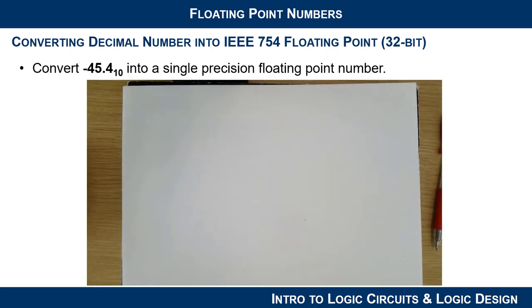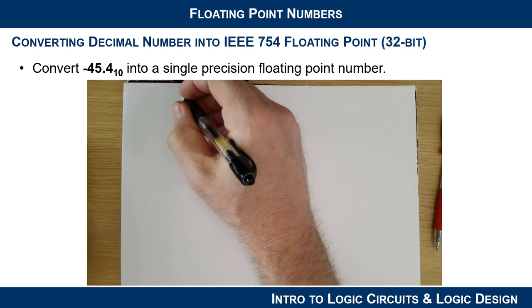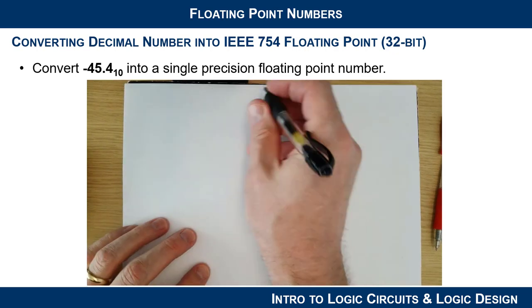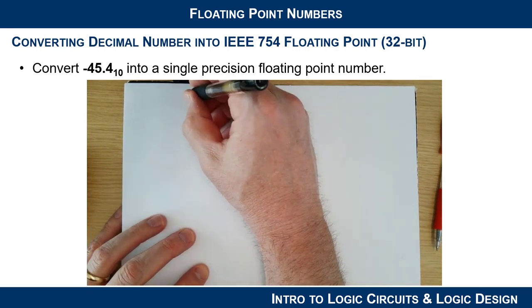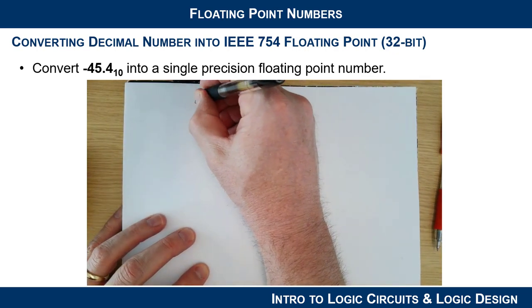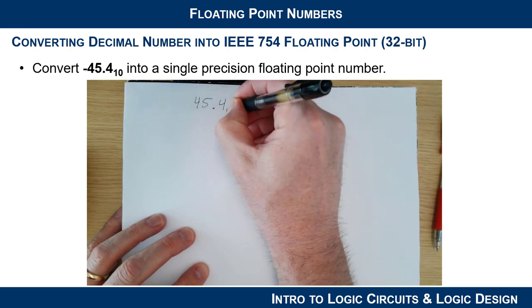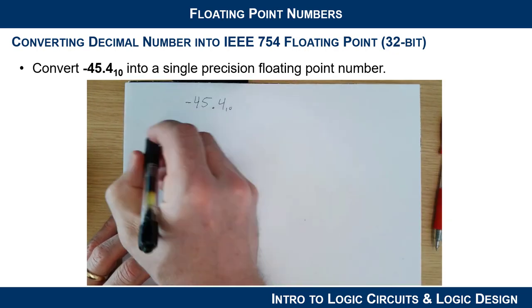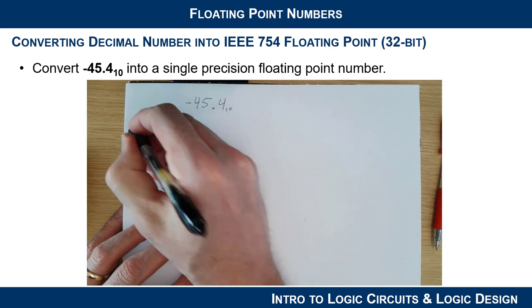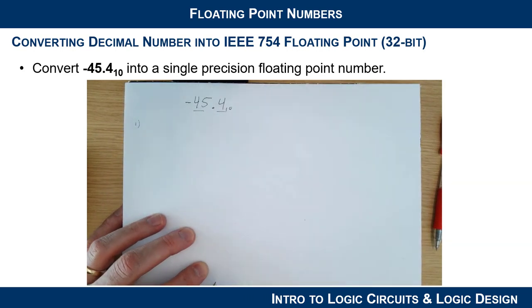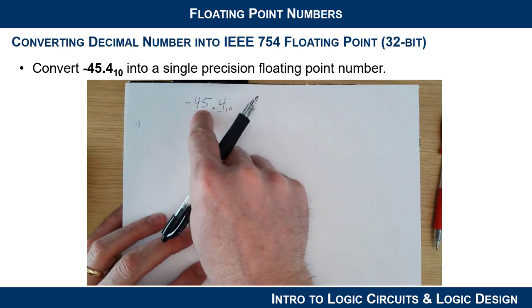The number we're going to tackle is negative 45.4. So we write down -45.4 base 10, and step one is to convert this into fixed point binary.